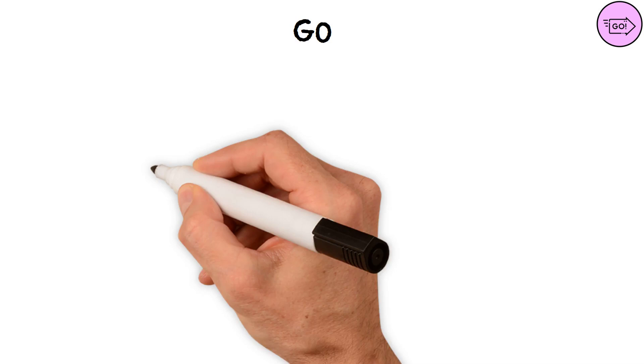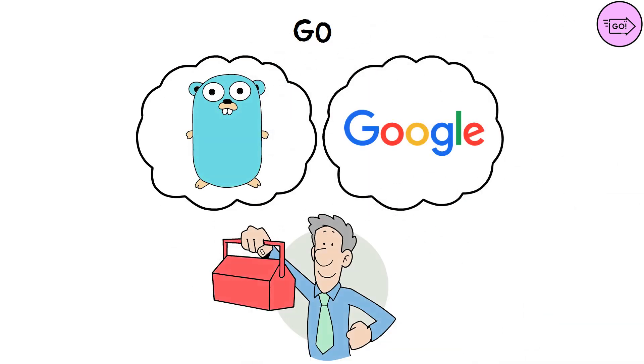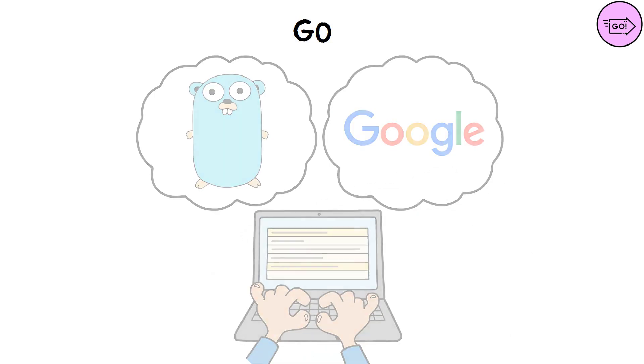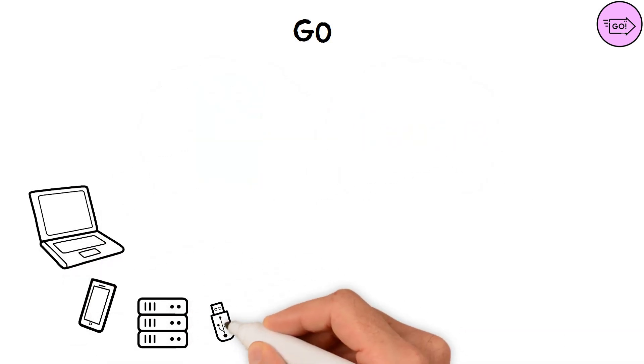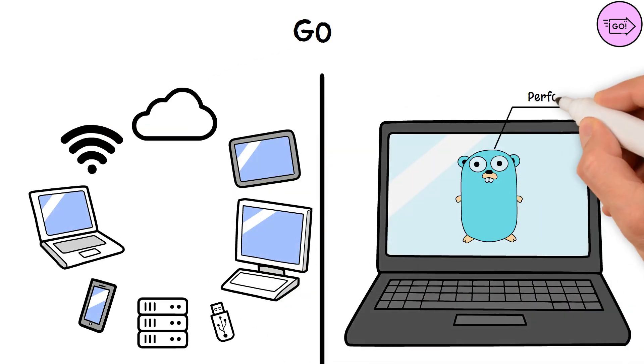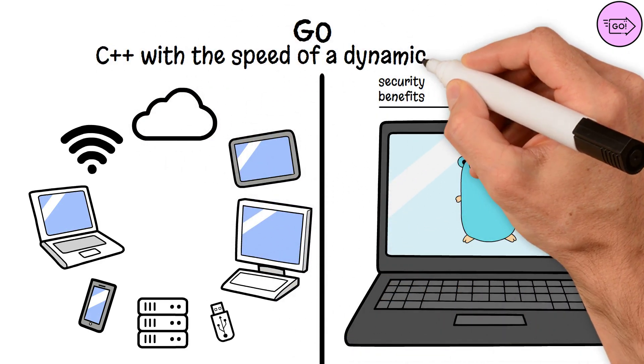Go. Go, or Golang, designed by Google, is like a supercharged toolbox for programmers who need to accomplish a lot quickly and efficiently. Ideal for building scalable network servers or large distributed systems, Go combines the performance and security benefits of C++ with the speed of a dynamic language.